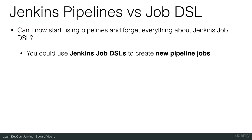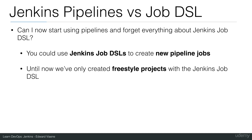You could use Jenkins Job DSLs to create new pipeline jobs. Until now, we have only created freestyle projects with the Jenkins Job DSL. A freestyle project is just some build steps in a shell — for instance, we did npm install and built a Docker image. You can put whatever build steps you want in a freestyle project. Pipelines is an alternative to the freestyle project — both are job types in Jenkins.